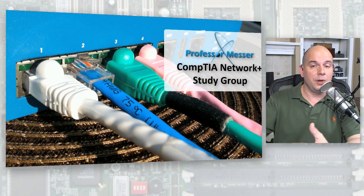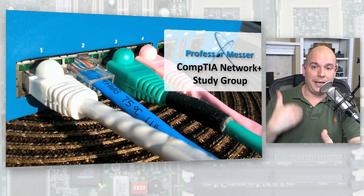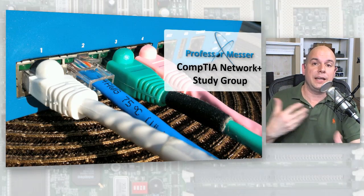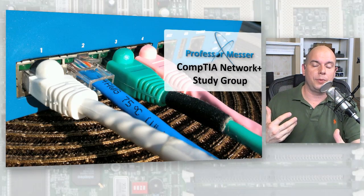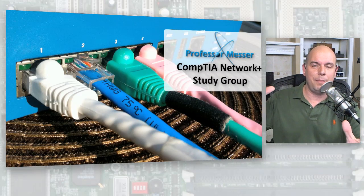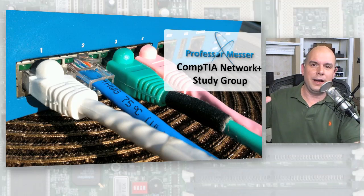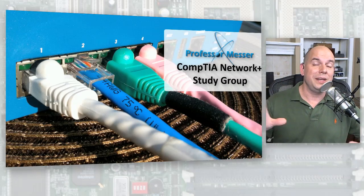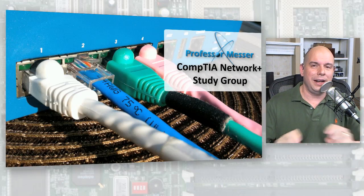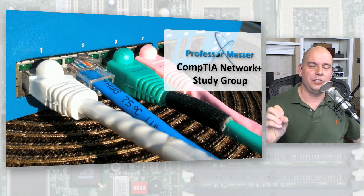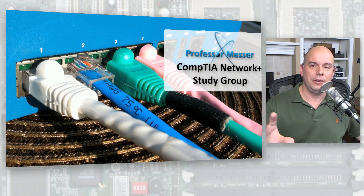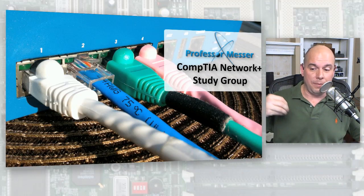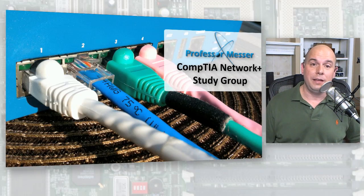When that fiber comes back up and that link comes back up, the dynamic routing protocol realizes — we're back up again. Forget Cincinnati, we're going to go directly there now. You didn't have to touch anything. You didn't have to make a modification to your router. You weren't woken up at three in the morning.